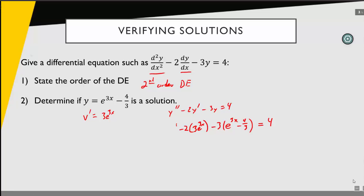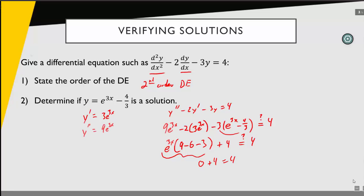Let's see what we have. We have e to the 3x in three terms, so we factor that out: (9 minus 6 minus 3) e to the 3x, and distributing the negative 3 over the 4/3 gives positive 4. That expression simplifies to 0, so we have 0 plus 4 equals 4. Yes, that is a true statement. Thus, y equals e to the 3x minus 4/3 is a solution to this differential equation.